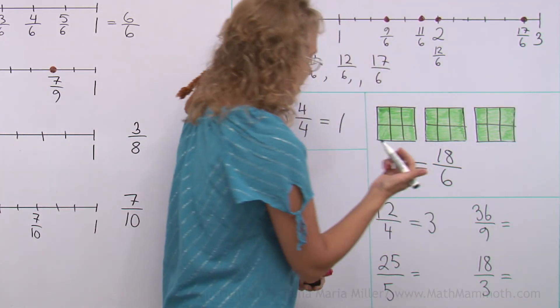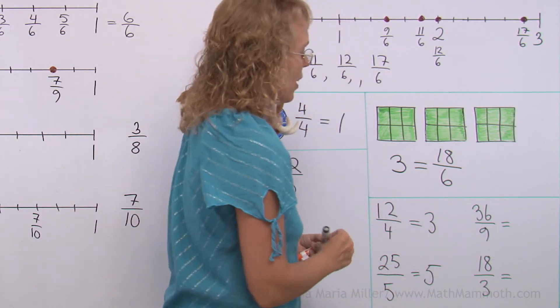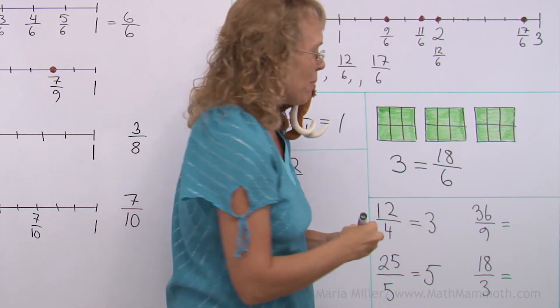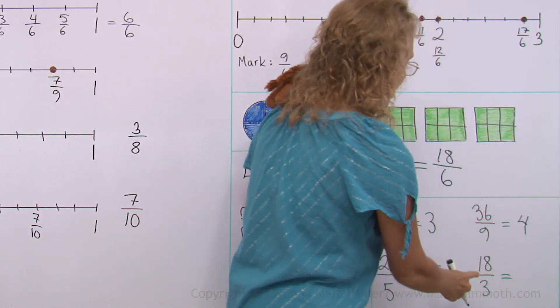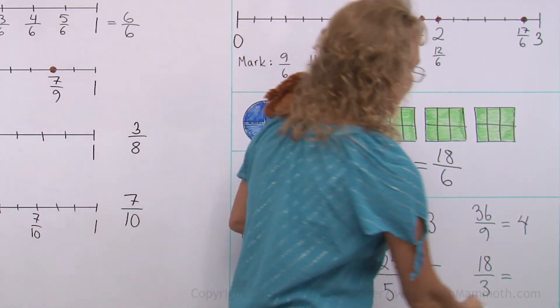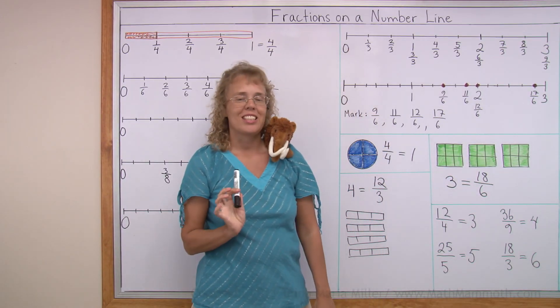25 fifths is the same as 25 divided by 5 equals 5. 36 ninths is the same as 36 divided by 9 equals 4. And then this last one. 18 thirds is the same as 6. The whole number 6. All right. Good job. We're all done with this lesson.